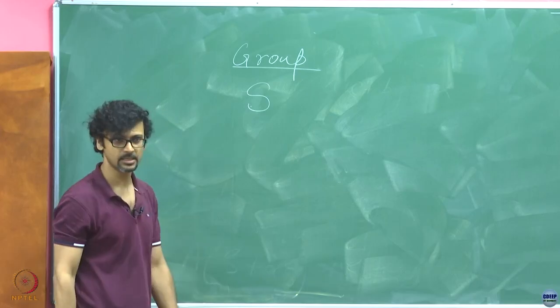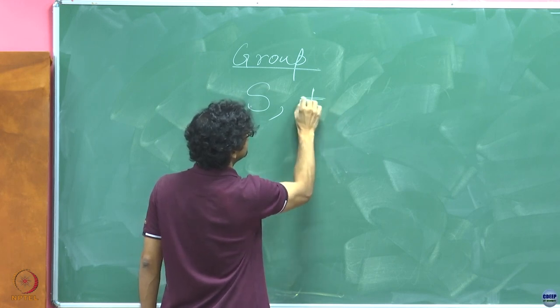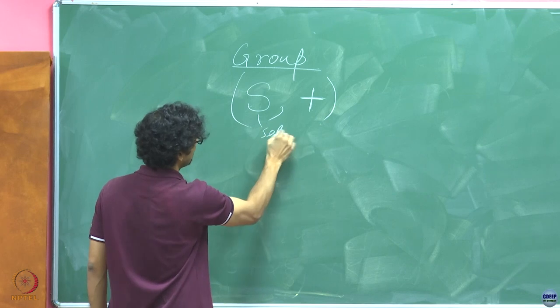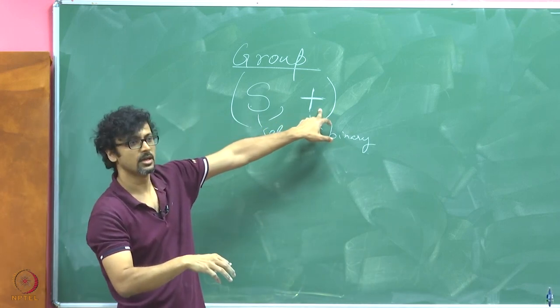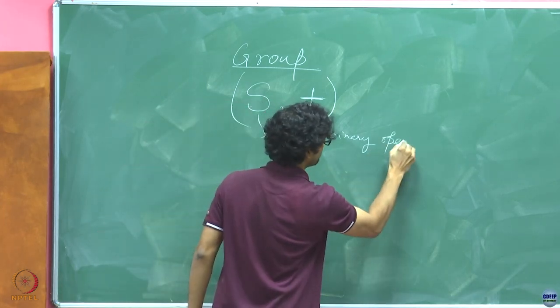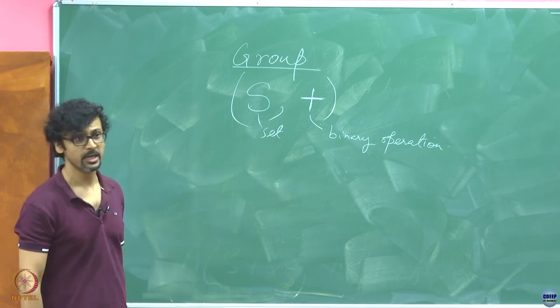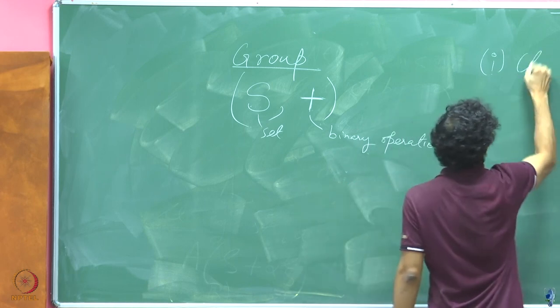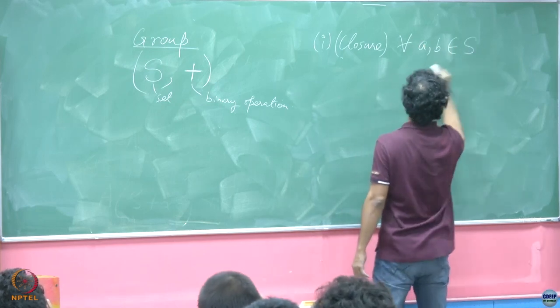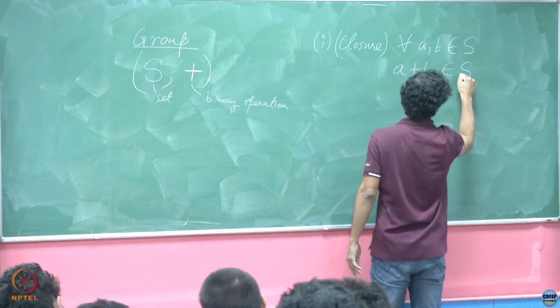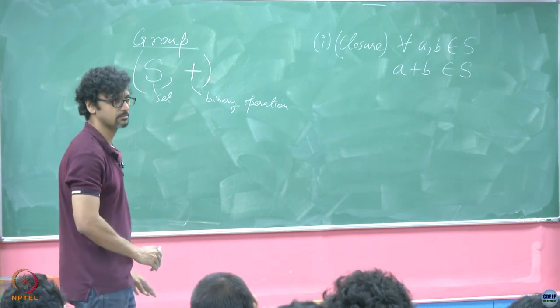So, this is a set and this is a binary operation. Binary operation means I take two elements from the set at a time and I get them to operate under this. So, there is a set, there is a binary operation. This is said to be a group if it satisfies the following. What is the first thing? It is called closure which means for all A, B belonging to S, A plus B also belongs to S. If I pluck out any two members from that set and pass them through that operation, what results should also belong to that set.